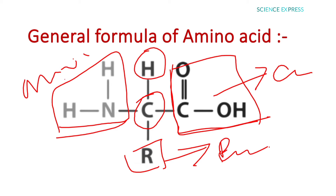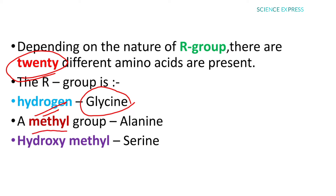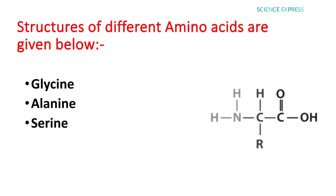The R group is the functional group, making the amino acid a derivative of methane — that is the general formula of amino acid. Depending on the nature of the R group, there are 20 different amino acids involved in protein synthesis in the human body. When the R group is hydrogen, the amino acid is glycine. When the R group is a methyl group (CH₃), the amino acid is alanine. When the R group is a hydroxymethyl group (CH₂OH), the amino acid is serine.